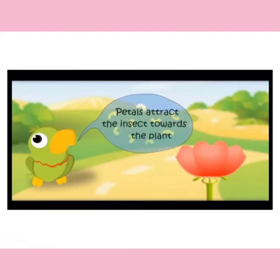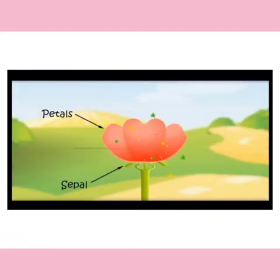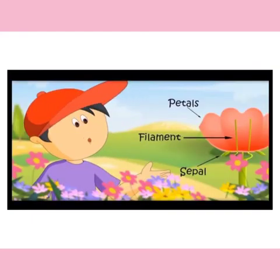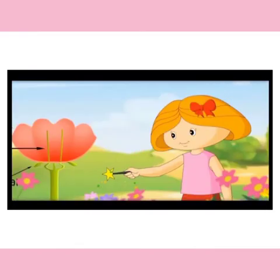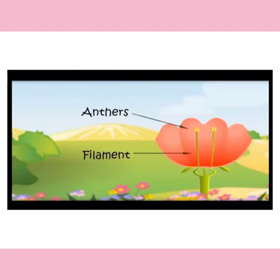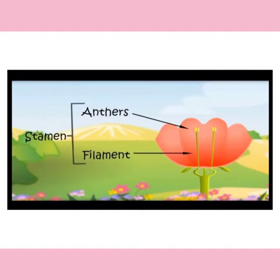The petal attracts insects towards the plant. Here come the filaments. Bring a few anthers too. These filaments and anthers are the male parts of the flower. Together, they are called the stamen.